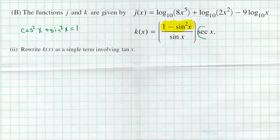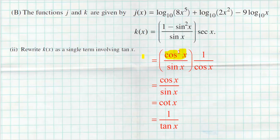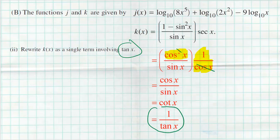I like to turn everything into sines and cosines, so I rewrite secant as one over cosine using reciprocal identities. The numerator becomes cosine squared and secant is one over cosine. One of the two cosines cancels out, leaving cosine over sine, which is cotangent. But they wanted the answer in terms of tangent, so using the reciprocal identity, cotangent equals one divided by tangent. That's the final answer: one divided by tangent.